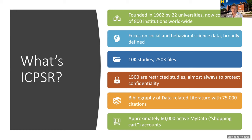We have roughly 10,000 studies that have 250,000 files. Files can include things like the question text for a survey, additional information about how the study was collected, or a paper about or leveraging the data. Roughly 1,500 of those are restricted studies, which means there are some additional criteria that people need to meet in order to work with the data to protect the confidentiality of the folks represented in it.